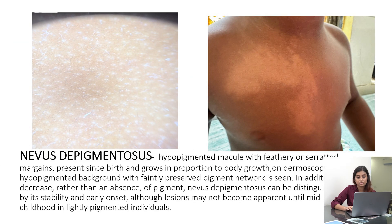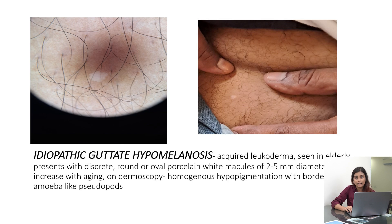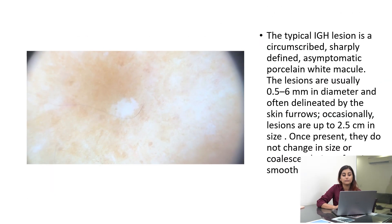Nevus depigmentosus has feathery margins; under a dermoscope you will be able to see faint pigmentation along with areas of hypopigmentation. In idiopathic guttate hypomelanosis — a disease seen in elderly people — the lesions are almost depigmented. Homogeneous hypopigmentation is present along with amoeba-like pseudopods, giving a nebuloid appearance. I put in a lot of effort to collect these cases and hoped it would reach the masses, as it is a genuinely thorough study. I hope you enjoyed the video.